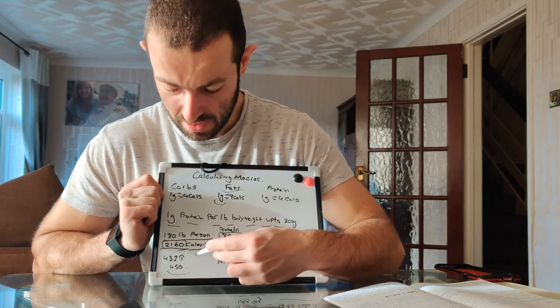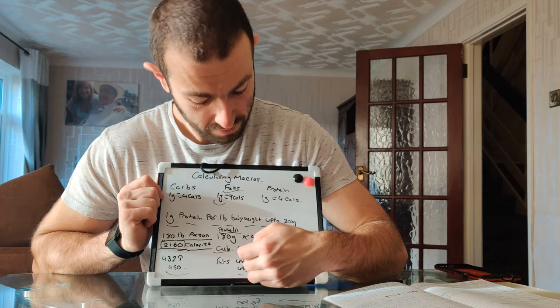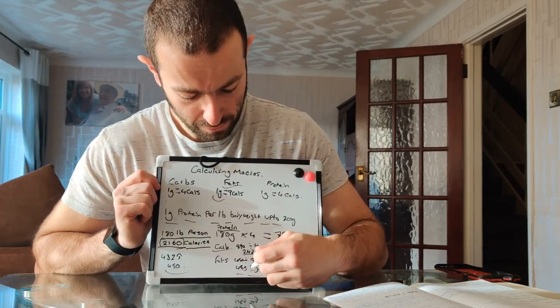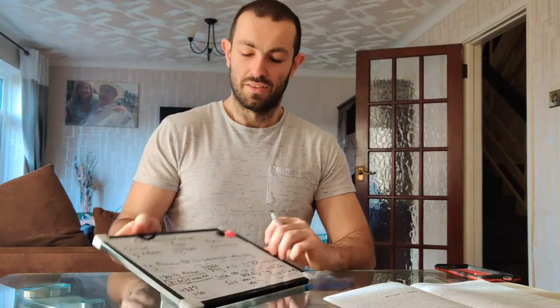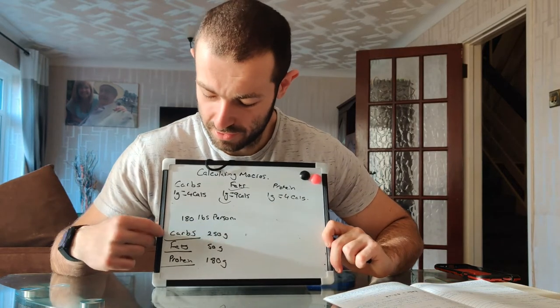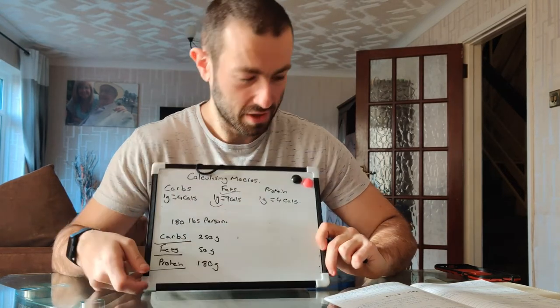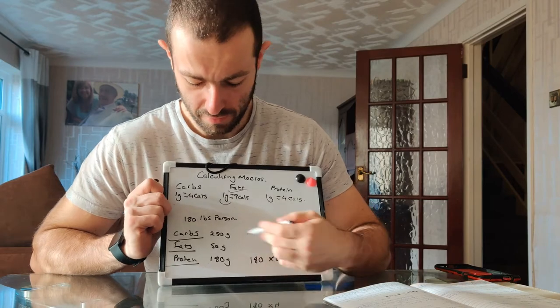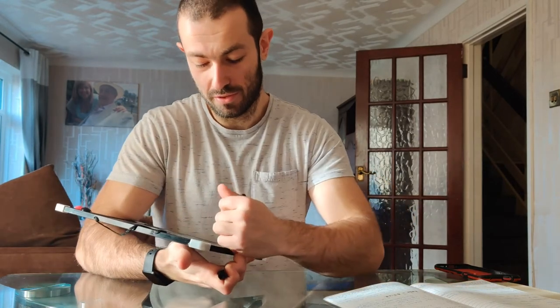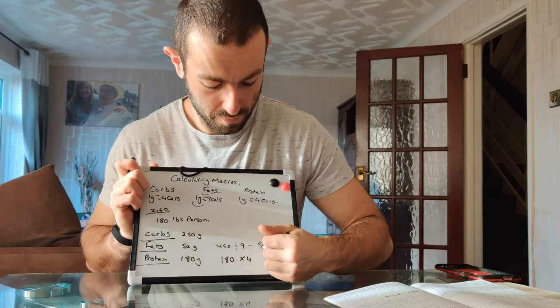So, very messy board! In summary: 180 grams of protein, looking at 250 grams of carbs, and 50 grams of fat. We worked this all out by our sums. For protein, we did 180 — as that is the weight — times 4, which gave us 720 calories, so 180 grams of protein. For our fats, we took 20% of our total calories. Total calories was 2160. We took 20% of 2160, which was 432, rounded up to 450, and divided by 9, giving us 50 grams of fat.